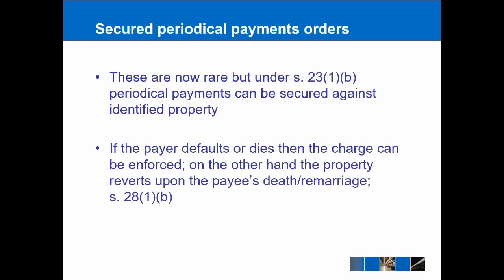Secured periodical payment orders are pretty much the same thing, and they're quite rare now. But under Section 23, the periodical payments can be secured against a particular piece of property. So if the person who is actually paying defaults on their periodical payments or if they should die, then the property can simply be transferred to the payee in order to ensure that they get their money and they don't lose out. On the other hand, the property can then revert back to the payer if the payee again dies or decides to remarry, and that's covered under Section 28.